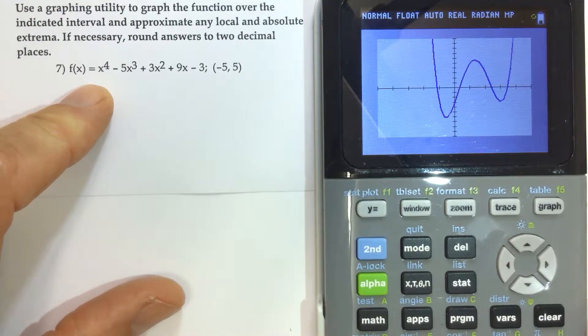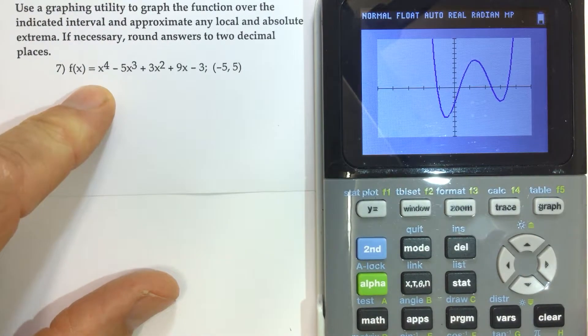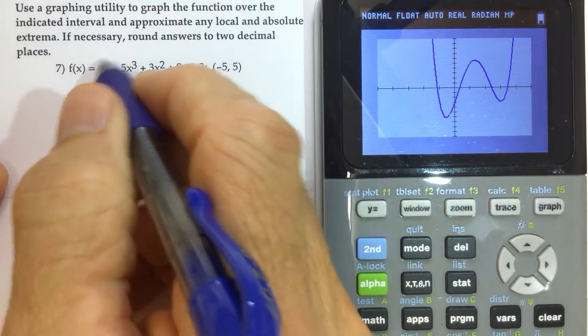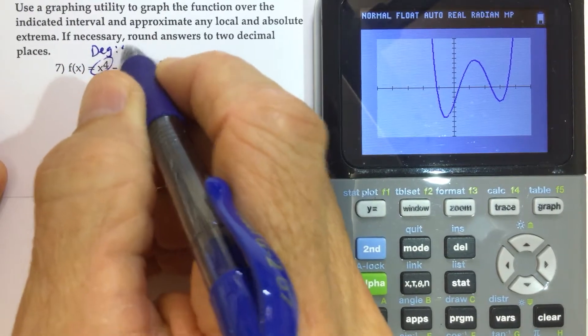And again, I don't know if this is going to work. Perfect. So we've got, we know, I should show you this too. We know that since it's a degree of 4, so the degree is 4.